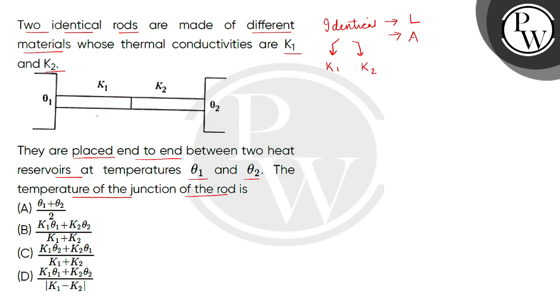We have an end to end joint. Suppose this is rod 1 and this is rod 2. Rod 1, the left end is Theta1 maintained. Rod 2, the right end is Theta2 maintained. We have to find the junction temperature, where both the materials are joined.